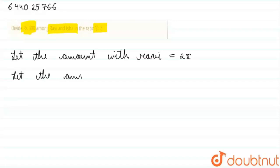Now let the amount with Isha is equal to 3x. Okay, so now the total amount will be...